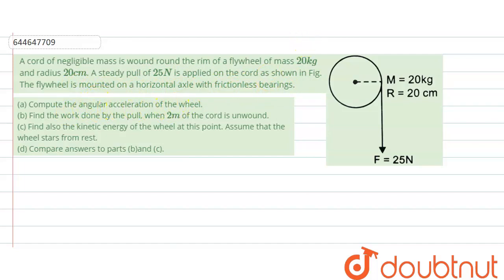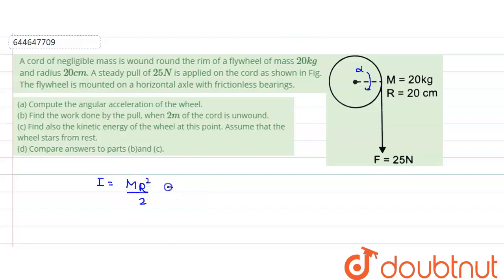We need to compute the angular acceleration of the wheel. A force of 25 newtons is applied, mass is 20 kg, and radius is 0.2 meters. First, we find the moment of inertia. Since it is essentially a disc, I equals mr² divided by 2. With mass 20 and radius 0.2 meters, the moment of inertia turns out to be 0.4 kg·m².